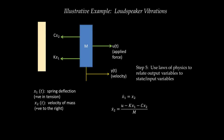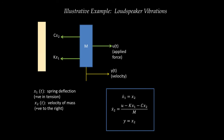Step 5 is to use the laws of physics to relate the output variables to the state and input variables. My output y(t) is the velocity of the mass, and x2(t) is also the velocity of the mass, so y(t) = x2. Looking at the equations in the box — state derivatives in terms of states and inputs, and the output in terms of states and inputs — this is my complete state space model of the loudspeaker.